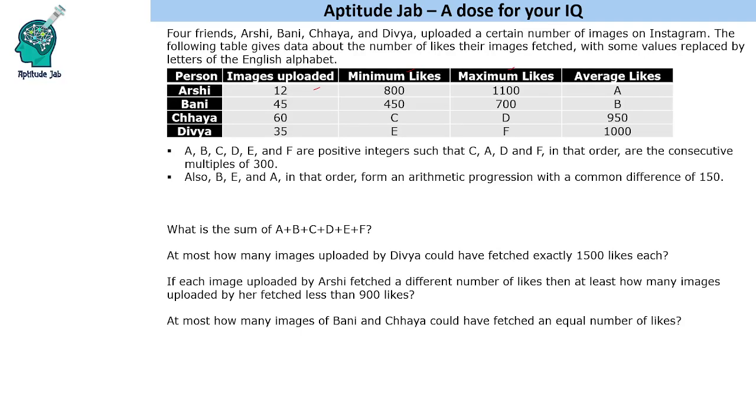Now we are given some information about A, B, C, D, E, F and questions are asked on it. A, B, C, D, E, F are positive integers such that C, A, D, F, in that order, are consecutive multiples of 300. Also, B, E, A, in that order, form an arithmetic progression with a common difference of 150. This makes the first question very simple.